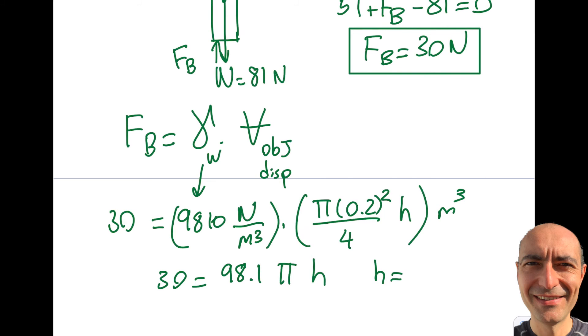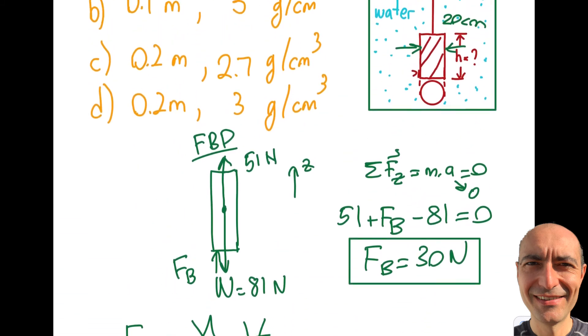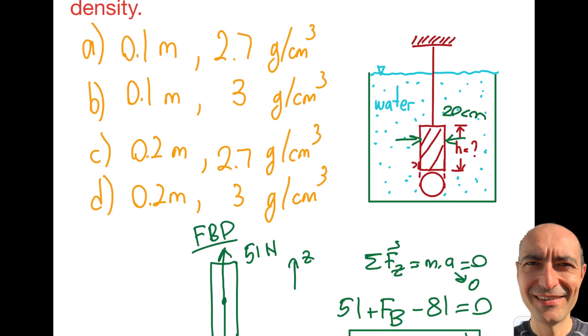And if I plug this into my calculator, I'm going to get myself 0.097 meters, right around 0.1. So if I go up there, you will see that the choice c and choice d are no good. It's either a or b.